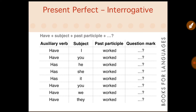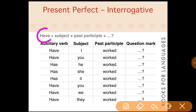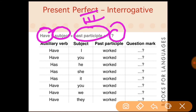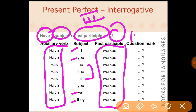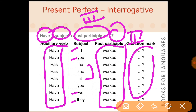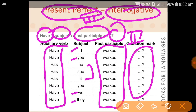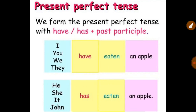Now, for the interrogative form of present perfect, the auxiliary verbs 'has' and 'have' are used. The format is: has or have — then the subject — then the past participle (third form) — then a question mark. 'Have' is used with I, you, we, and they. 'Has' is used with he, she, and it.